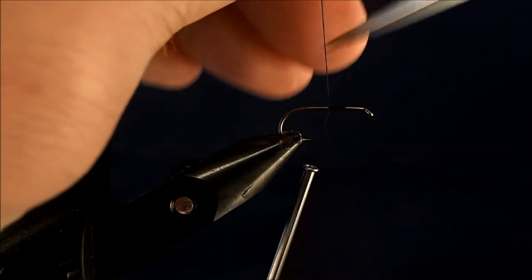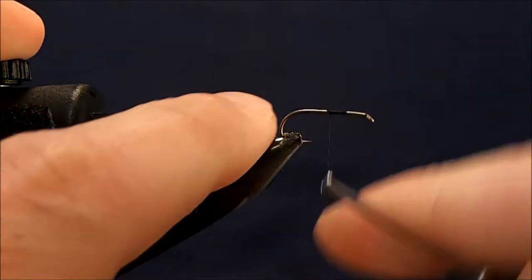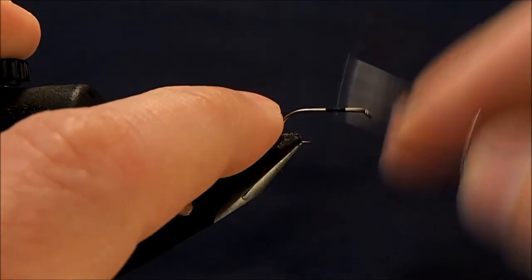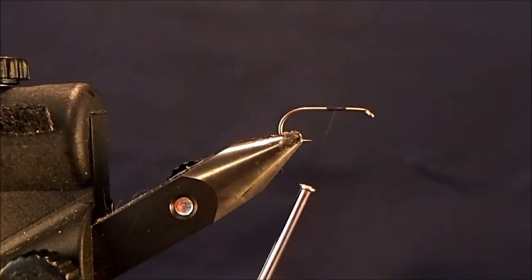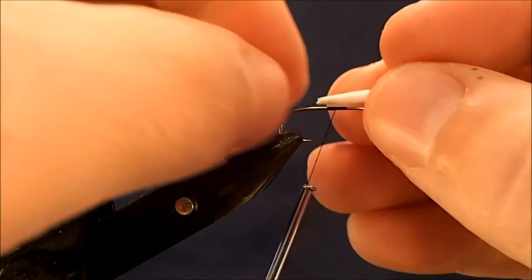Snip off the extra thread and now I tie this with an indicator post. I'm just going to use a white piece of foam to give me some more visibility.